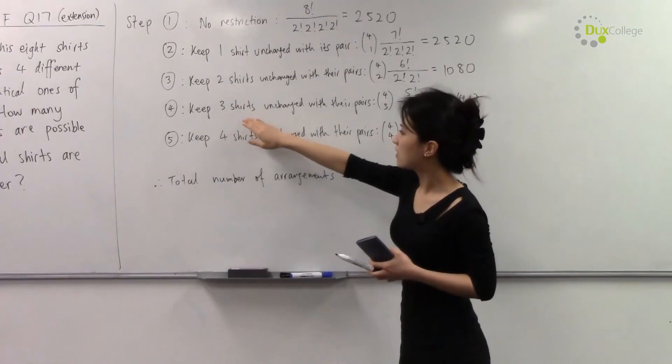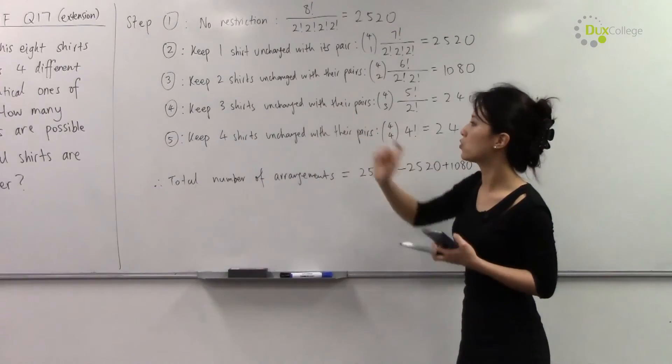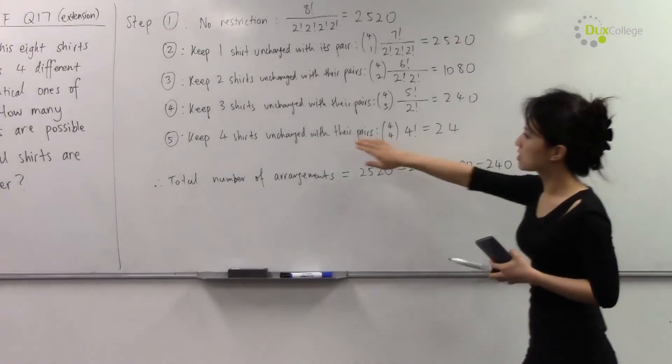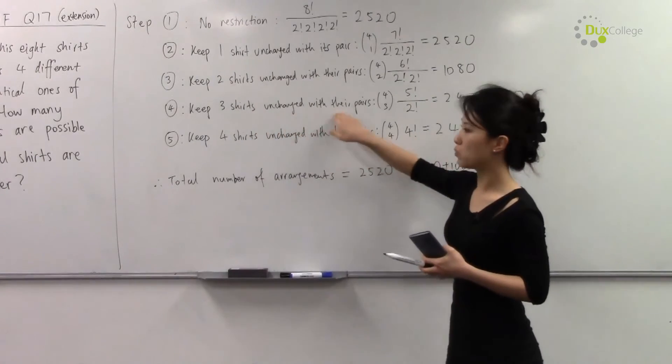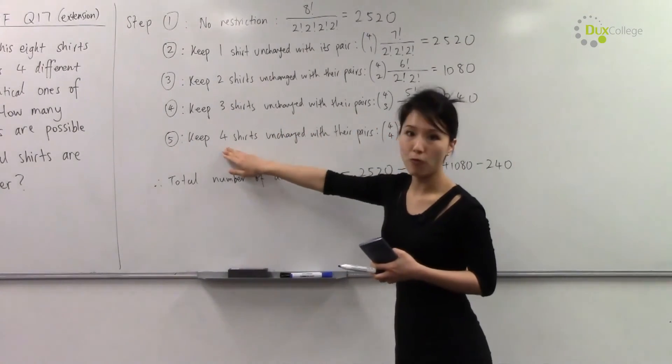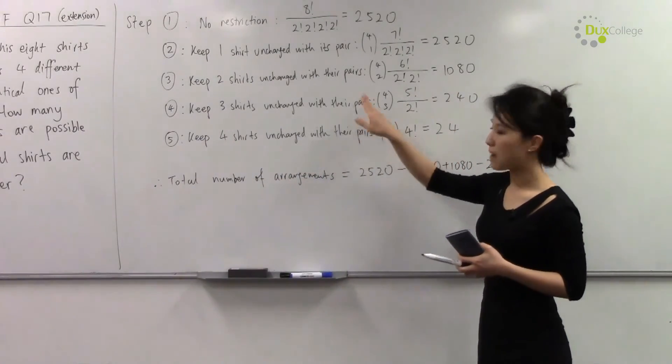And when you add the situation where you have two shirts unchanged with their pairs, you're also adding three shirts unchanged with their pairs. So you're subtracting the situation where you have four shirts unchanged with their pairs. So you actually need to add that back.